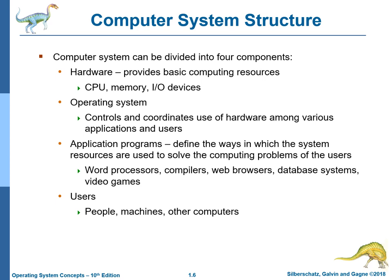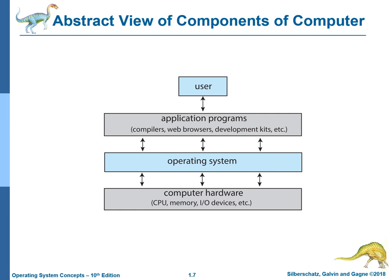A computer system can be divided into four components. The first is hardware, which provides basic computing resources like CPU, memory, and input-output devices. The second is the operating system, which controls and coordinates use of hardware among various applications and users. The third is application programs, which define the ways system resources are used to solve computing problems — like word processors, compilers, web browsers, database systems, and video games. The last is users, like people, machines, and other computers. This is the abstract view of components of a computer.